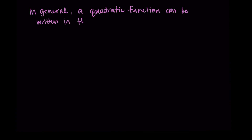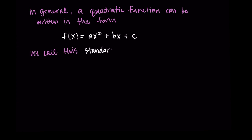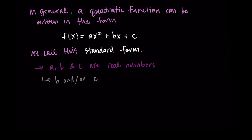In general, a quadratic function can be written in the form f(x) = ax² + bx + c. This is called standard form of a quadratic function — similar to how every linear function can be written as mx + b. Here a, b, and c are real numbers. Importantly, b and c could be 0, but a cannot be 0, because we need that x squared term. Without it, it wouldn't be a quadratic.